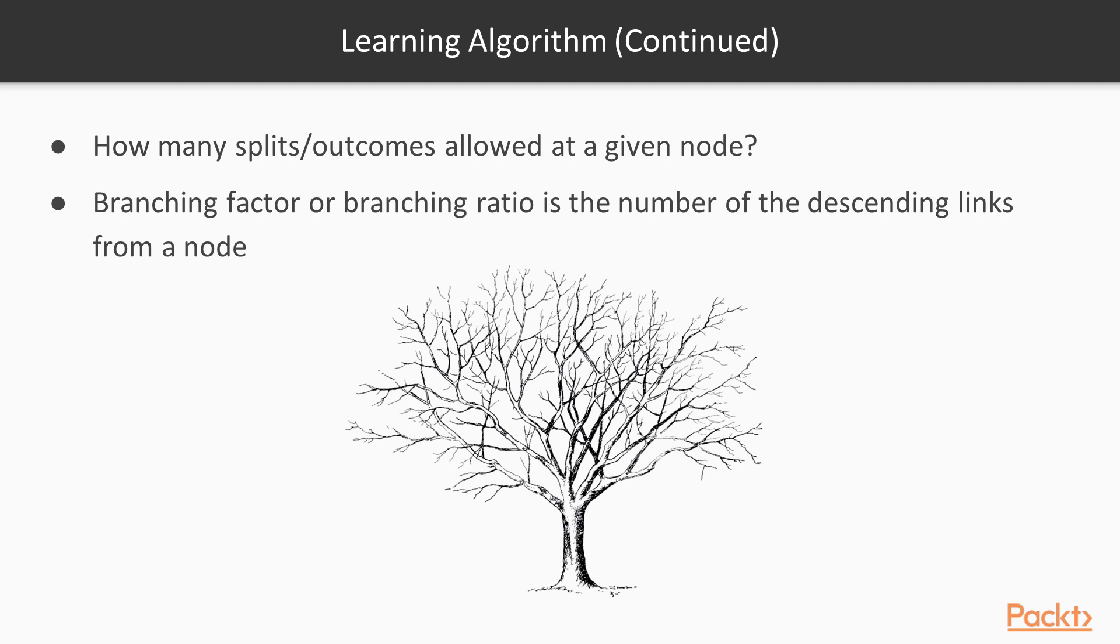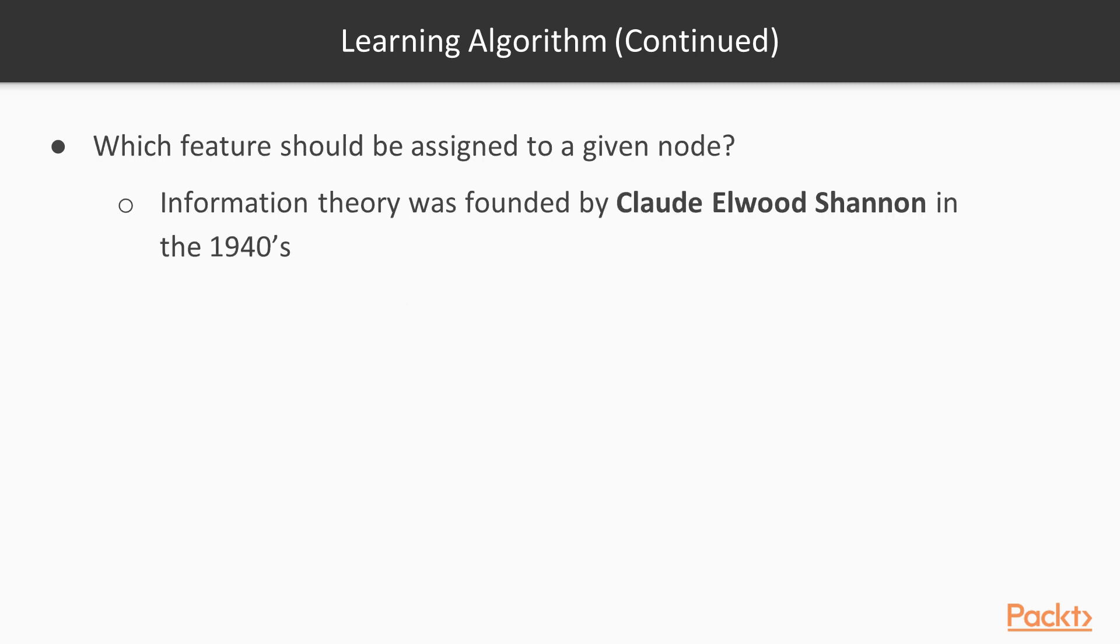The next question is concerned with the branching factor, which is sometimes called the branching ratio. It's a common concept in trees. The branching factor is the cardinality of the outgoing nodes, or in other words, simply how many branches are allowed to descend from each node.